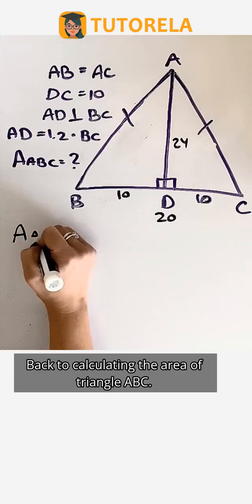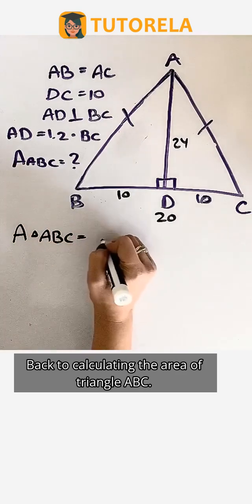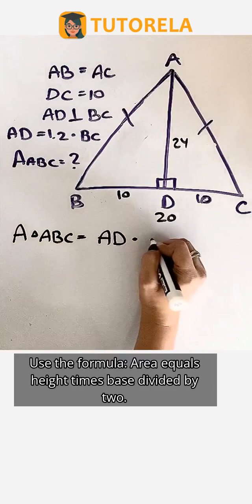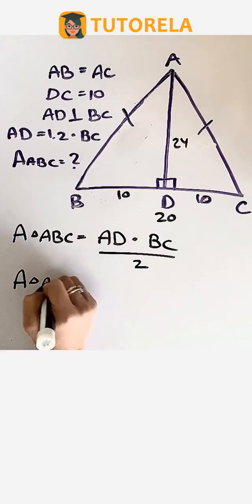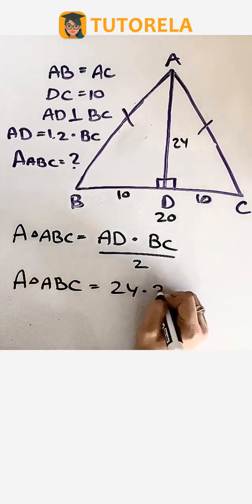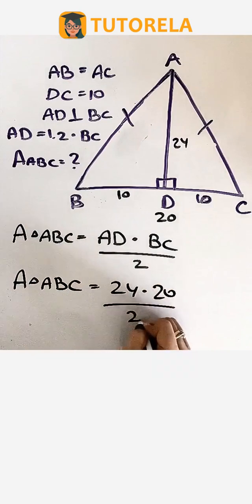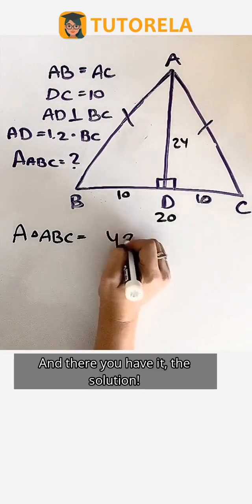Back to calculating the area of triangle ABC. Use the formula: area equals height times base divided by 2. Let's plug in the numbers we found. Now let's calculate and solve. And there you have it, the solution.